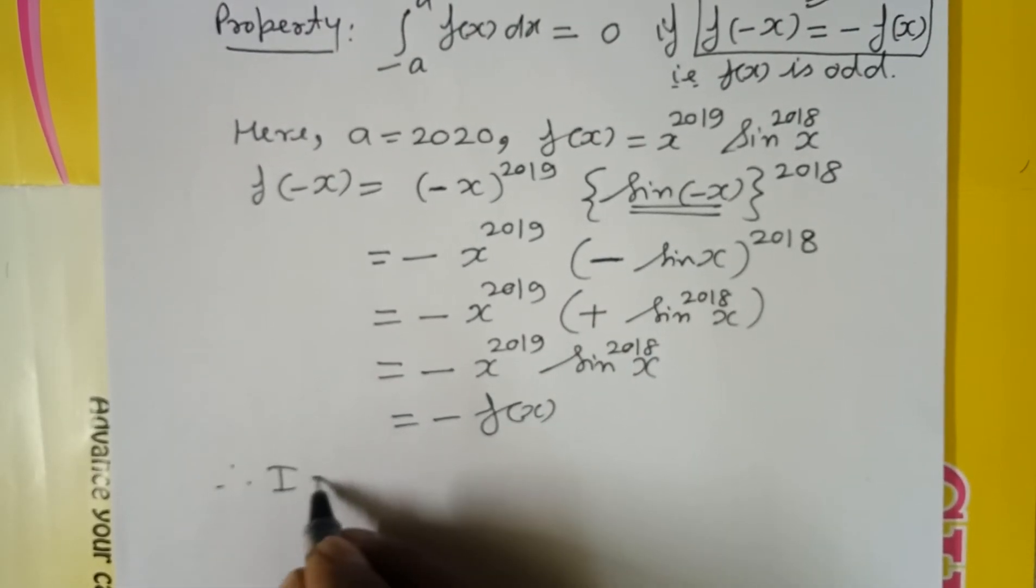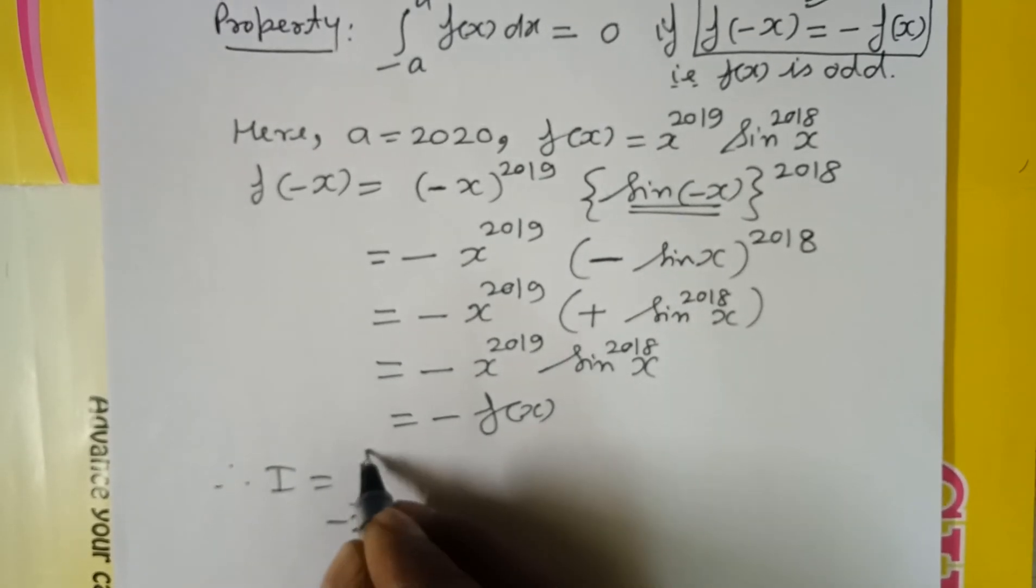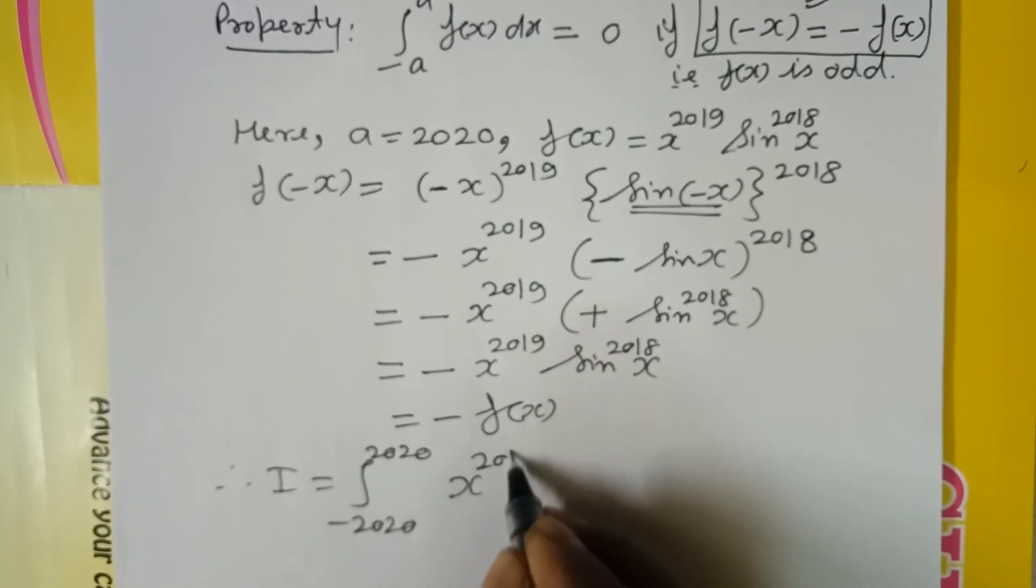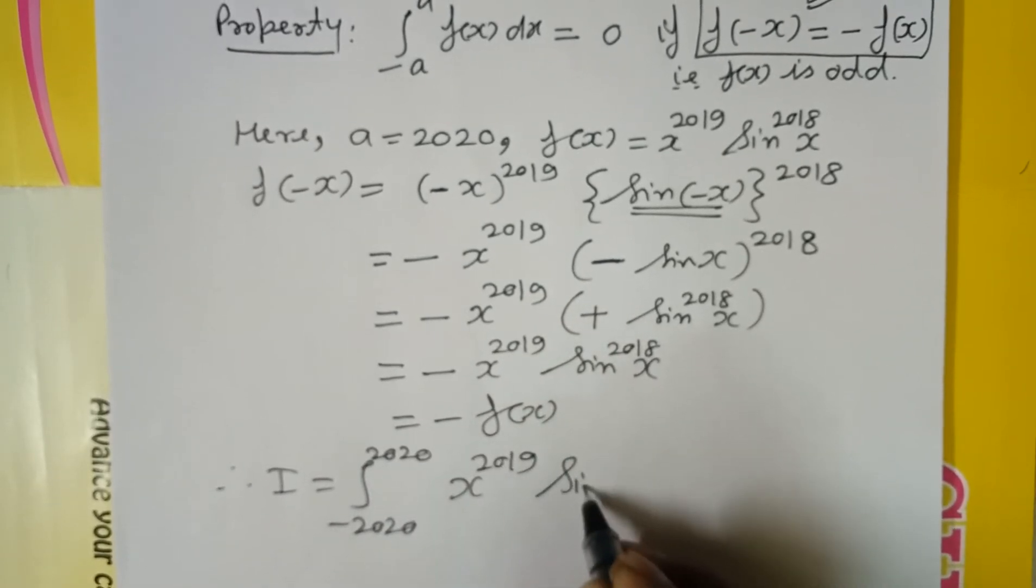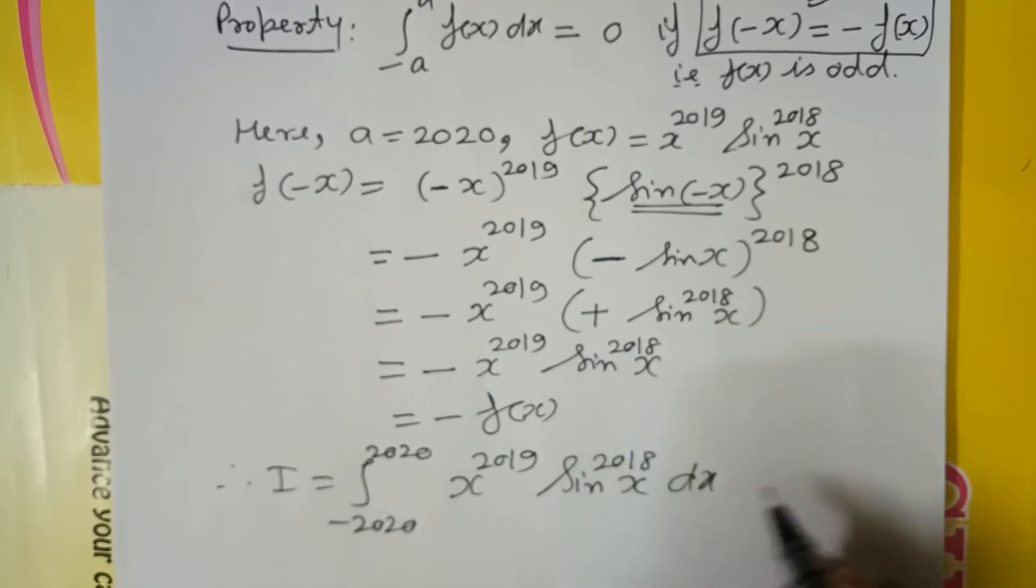Therefore, our integral from minus 2020 to 2020 of x to the power 2019 sin x to the power 2018 dx will be equal to 0.